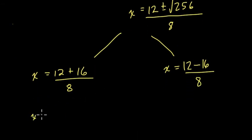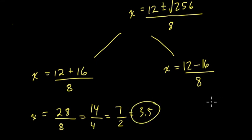So then we finish. We have x equals 28 over 8. If we reduce that, it's 14 over 4. If we reduce that again, it's 7 over 2, which is 3 and a half. And here we have 12 minus 16, which is negative 4 over 8, which is negative 1 half.